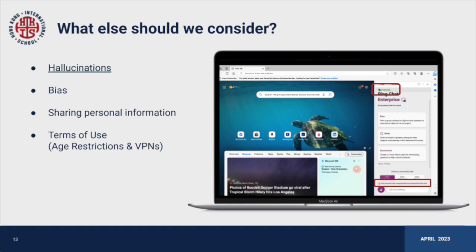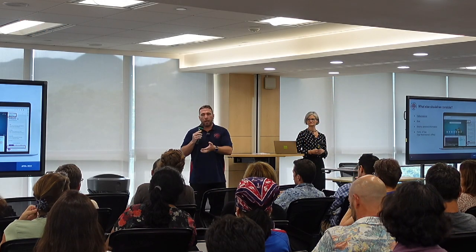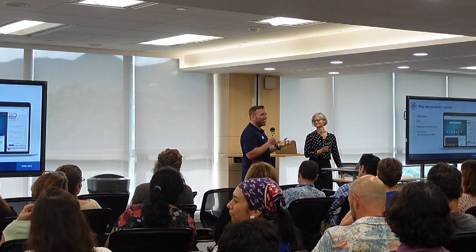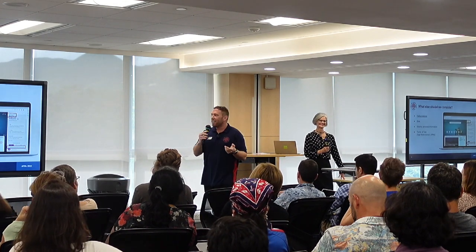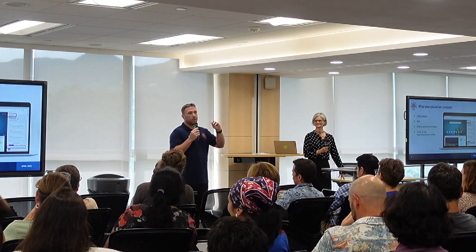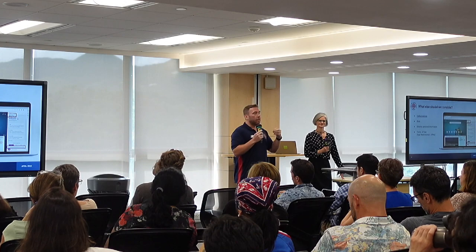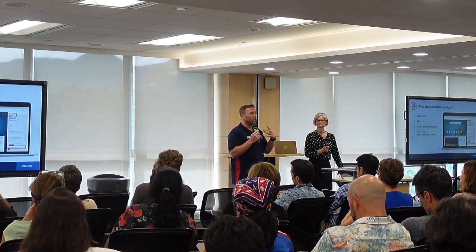We also need to think about the terms of use. Our recommendation is to use the big players — people who have something to lose. There are a lot of people who can develop tools; students in computer science classes are building their own neural networks. But you wouldn't put your data in the hands of just anyone. We need to make sure our data and our students' data is secure. Stick to the big players.